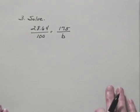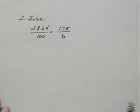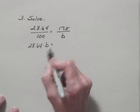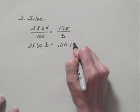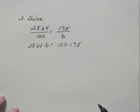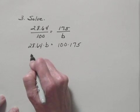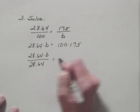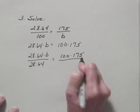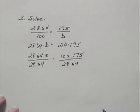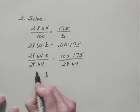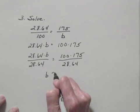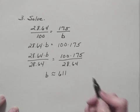Let's go ahead and solve — the third step in the process. We solve this proportion by finding the cross products and equating them. Multiplying this way, I have 28.64 times B, and the other cross product is 100 times 175. I solve this by dividing by 28.64 on both sides of the equation, giving 28.64B divided by 28.64 equals 100 times 175 divided by 28.64. On the left side I'm left with B, because 28.64 over 28.64 is 1. Doing the computation on the right-hand side and rounding to the nearest one, B is approximately equal to 611.